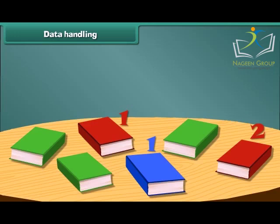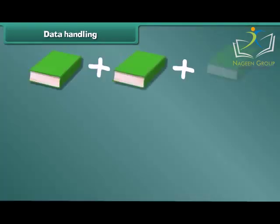How many green colored books do you see? 1, 2, 3. There are 3 green colored books.